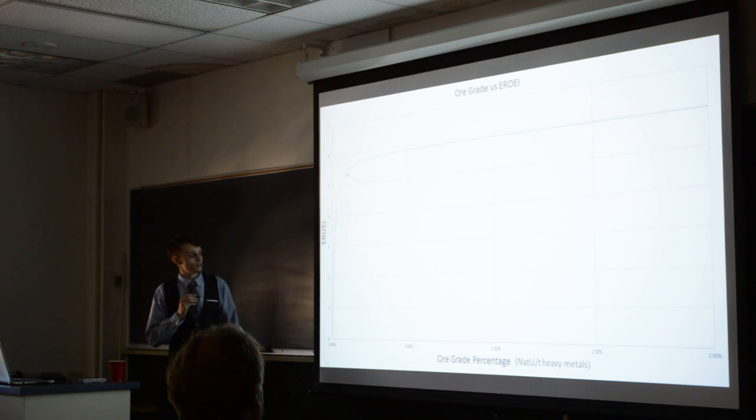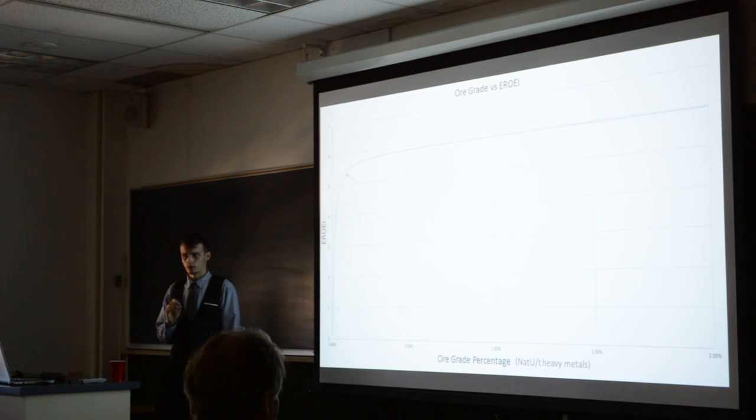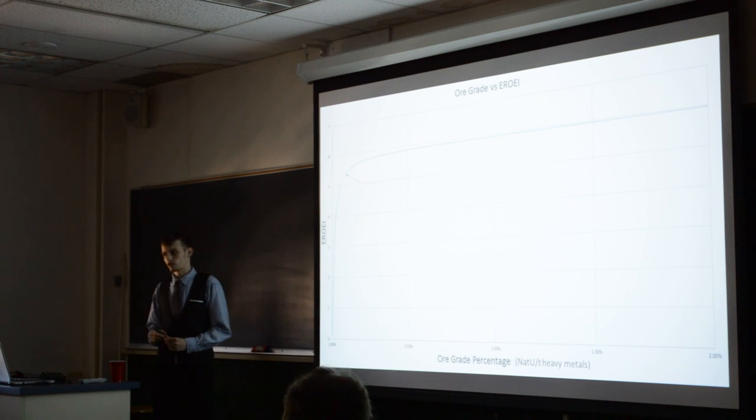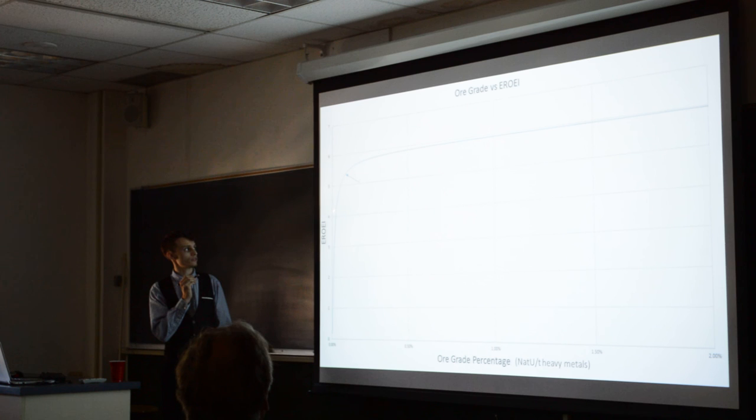The ore grade, this plateaus right here about 0.3% in the ore that we're mining. So that's the natural uranium out of all of the heavy metals. And currently we're right here at about 0.125%. And it's constantly falling. So as this just slightly goes less and less, the EROEI will eventually just drop to zero and nuclear will be completely unfeasible.